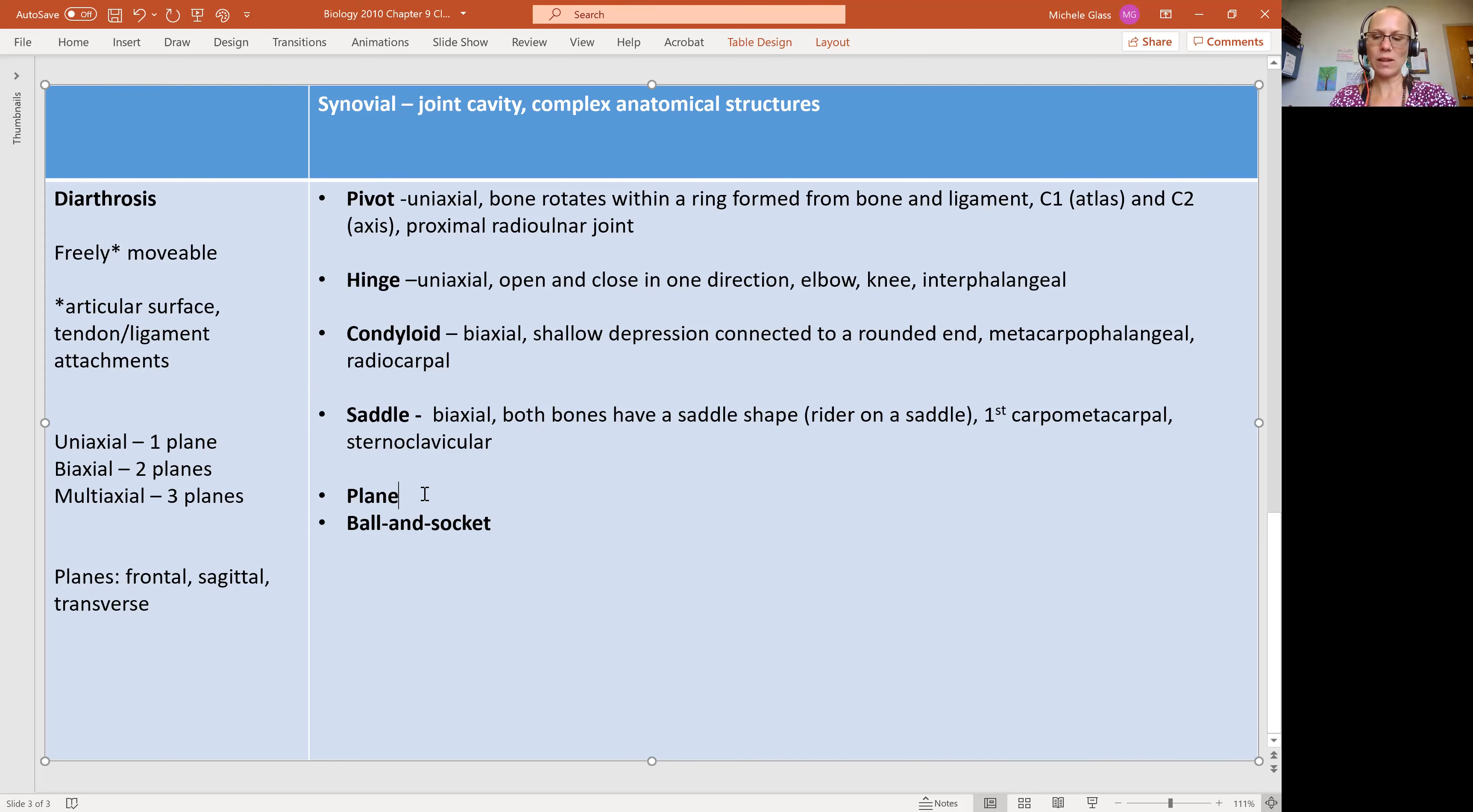And then as we finish up our list, we are getting into those that have the most movement. So a plane joint is going to be multiaxial. And in this case, you have flat or slightly curved surfaces.